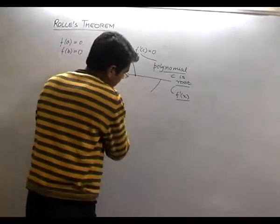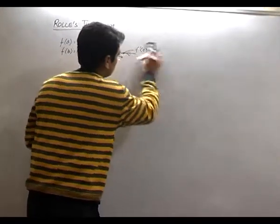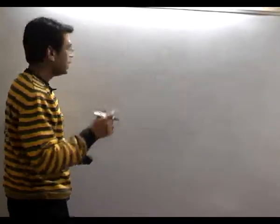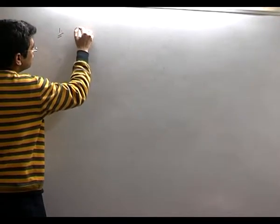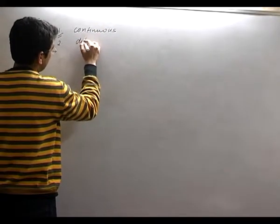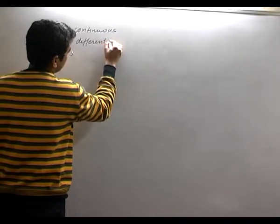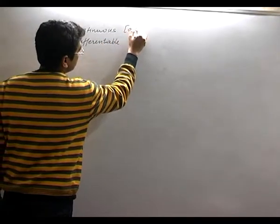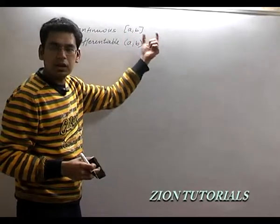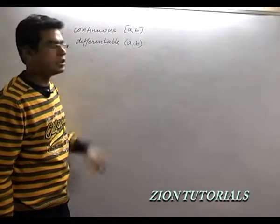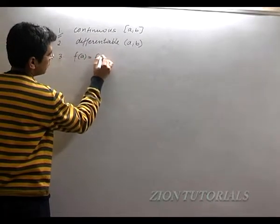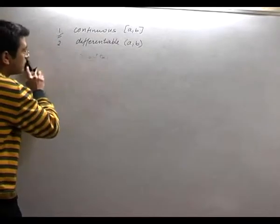अब इसका एक और बड़ा भाई — Lagrange's theorem — देखते हैं। Rolle's theorem उससे derive होती है। मेरी पहली दोनों conditions वही हैं: f(x) continuous होना चाहिए और differentiable भी होना चाहिए। लेकिन तीसरी condition — f(a) = f(b) — मैंने हटा दी। अब सिर्फ ये दो conditions हैं।